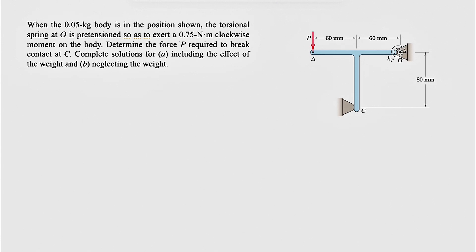We know when the 0.05 kg body is in the position shown, the torsional spring at O is pretensioned so as to exert a 0.75 N·m clockwise moment on the body.